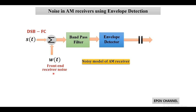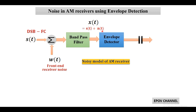This noisy received signal is first passed through a bandpass filter and we get signal X(t). This bandpass filter converts W(t) into a narrow band noise, or filtered noise, which is compatible with the input standard AM signal.